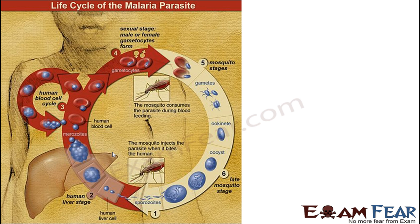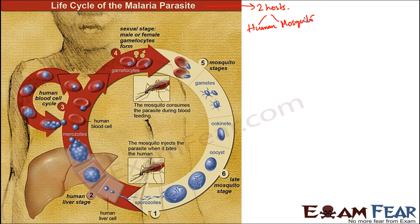The life cycle of plasmodium is quite interesting because it involves two hosts, not a single host. One host is a human being and the other host is a mosquito. So this malarial parasite has two hosts: human and mosquito. Now we will see how humans and mosquitoes act as hosts for plasmodium.